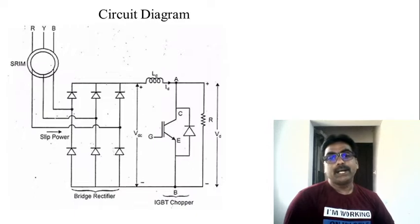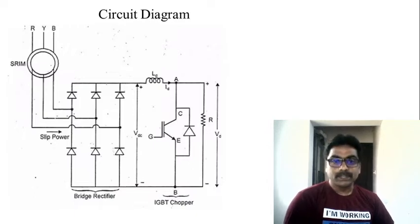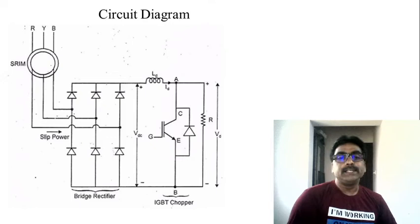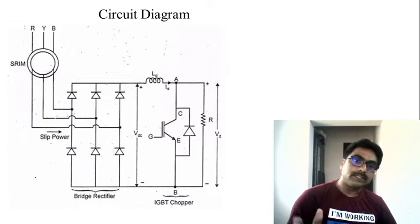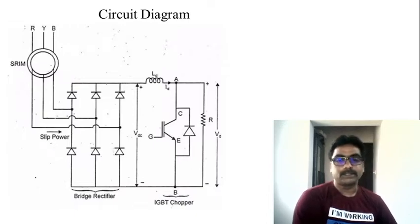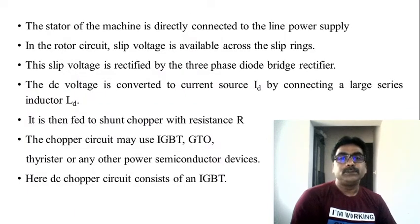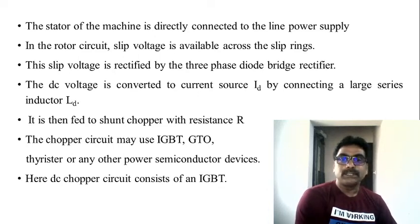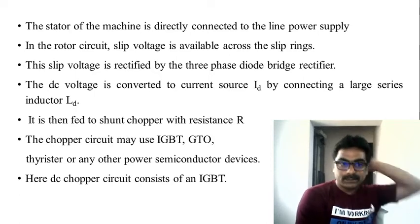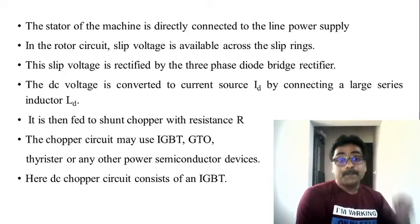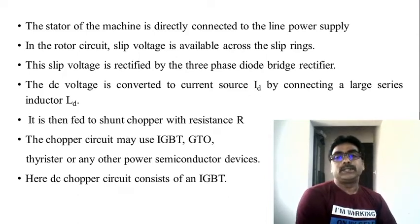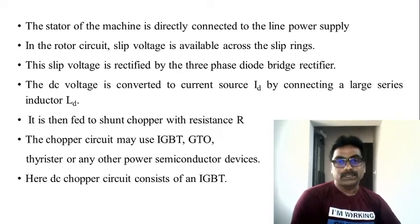There is also a DC link inductor connected in series, and we have a chopper circuit. The external resistor is connected across the switch — it is connected across the rotor of the induction motor through this chopper circuit. The DC voltage is converted into a current source by connecting the large series inductor, and that is the purpose of this inductor connected in series to the circuit.